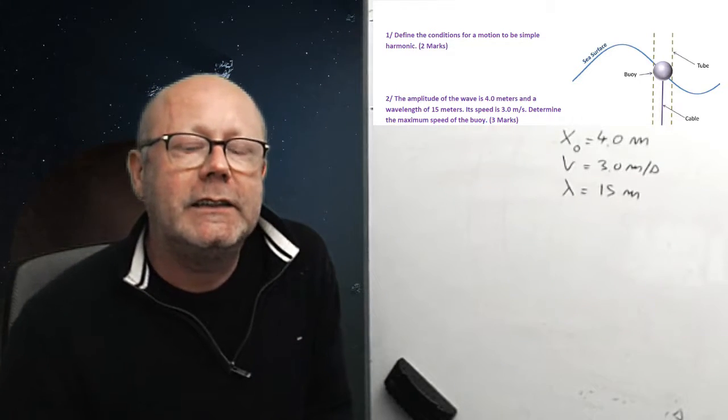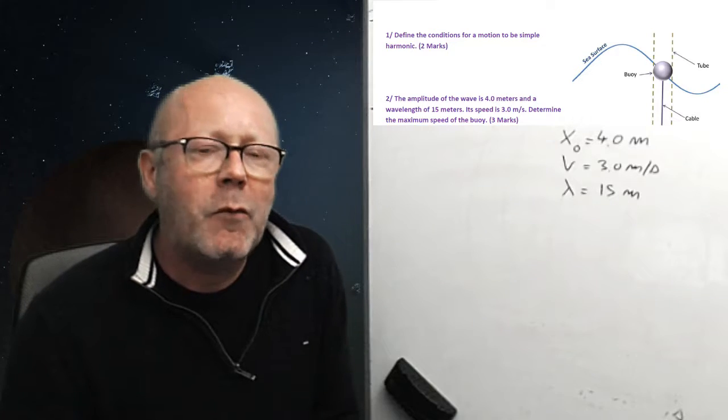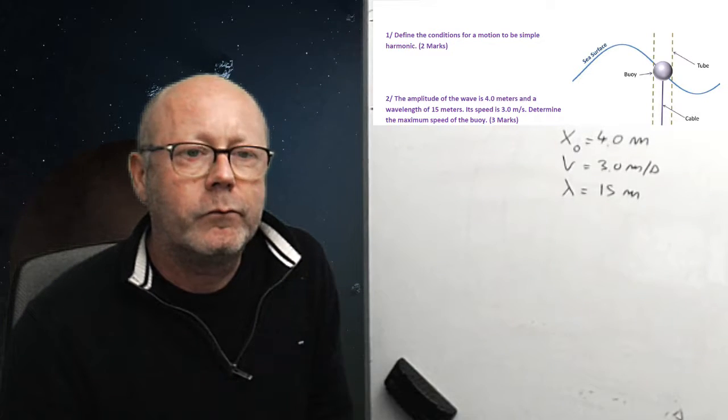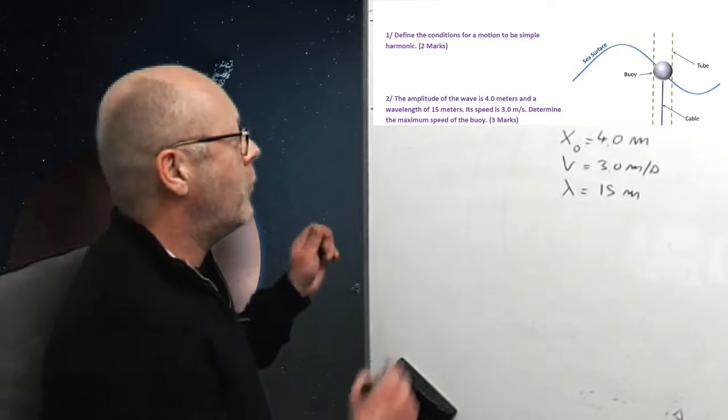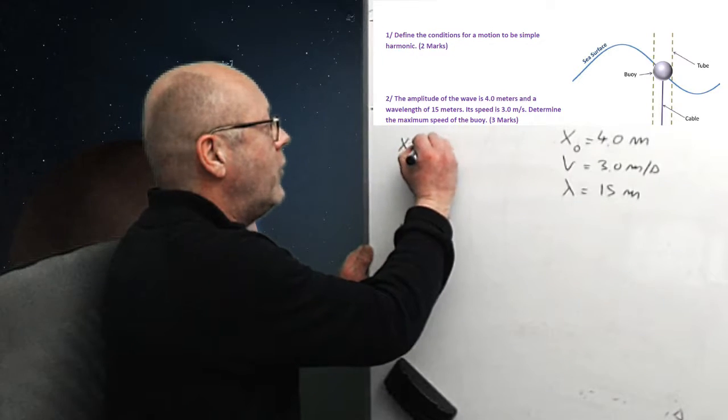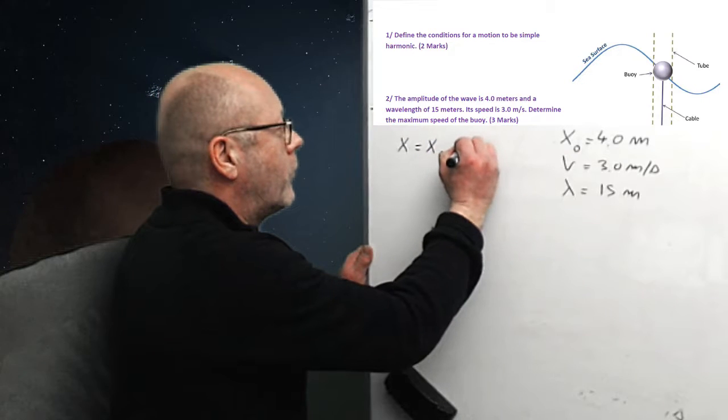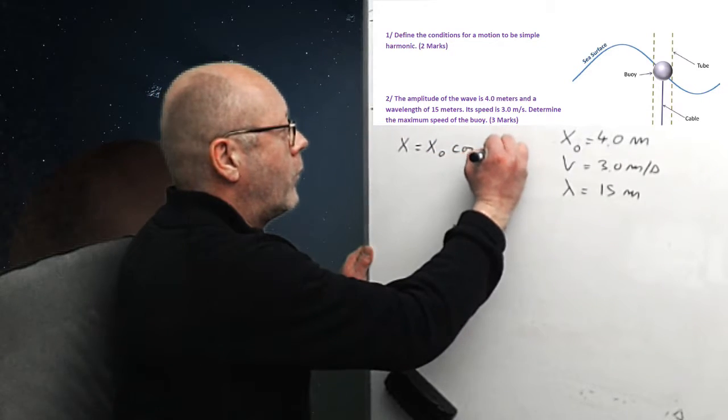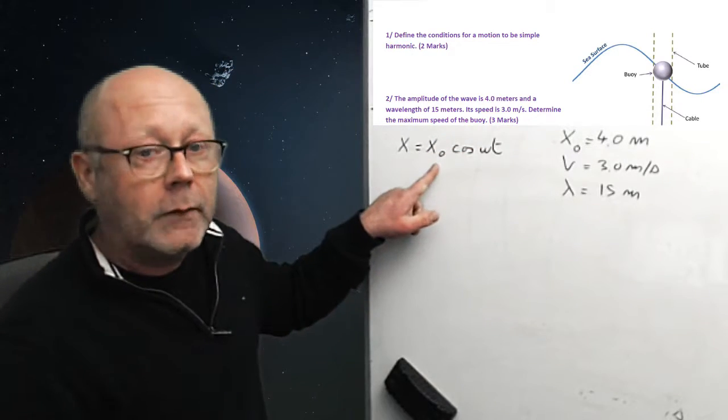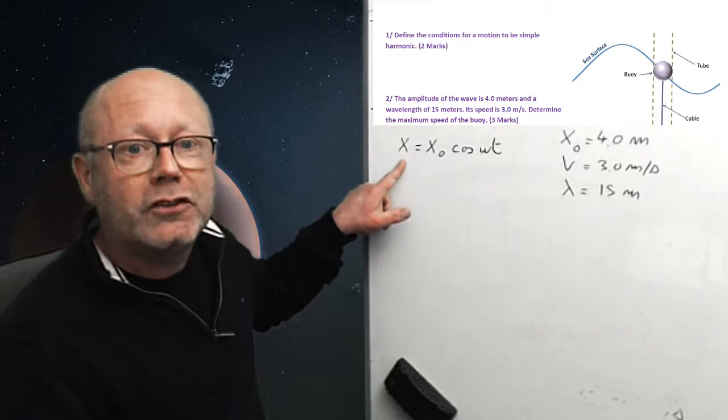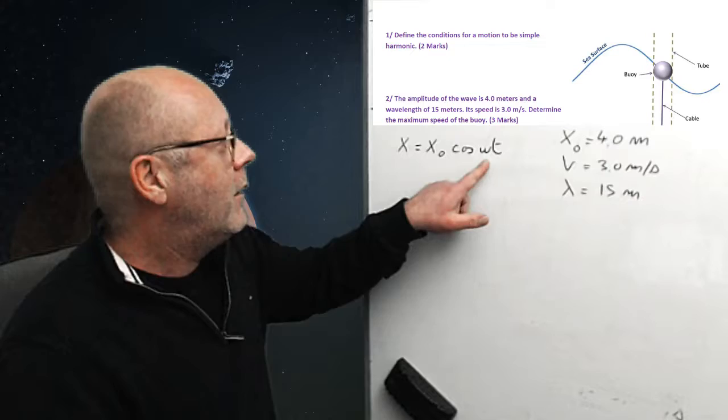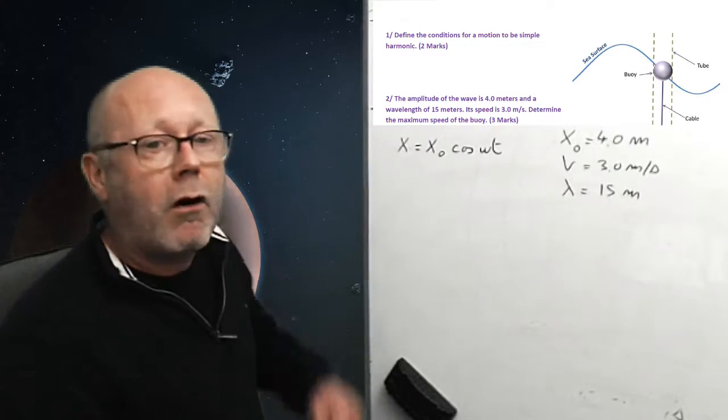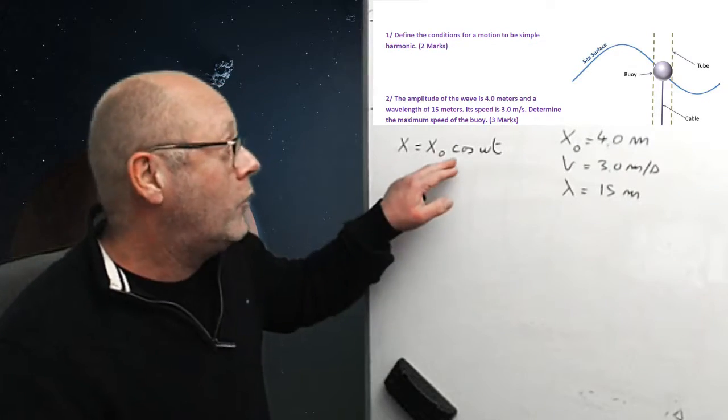Good. So, we are interested in knowing the maximum velocity of the buoy. So, it's a simple harmonic motion. So, we could describe the motion of the buoy with this equation. That's the amplitude. That's the motion of the buoy, or the position of the buoy, or the displacement of the buoy at a given time. And this is the angular velocity. It's typical of a simple harmonic motion. You can also put sine here.